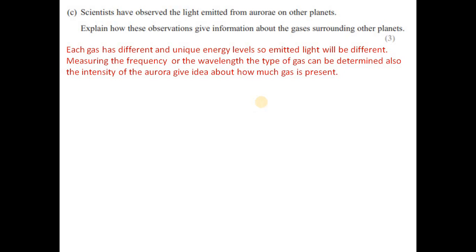Scientists have observed light emitted from auroras on other planets. Explain why this gives information about the gases present. Every gas atom has a unique set of energy levels, so the emitted light will have different frequencies and wavelengths. By knowing the frequency and wavelength of the emitted light, scientists can identify the type and amount of gas present. That's it for this paper — take care!